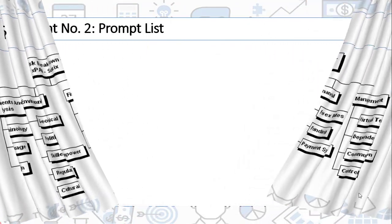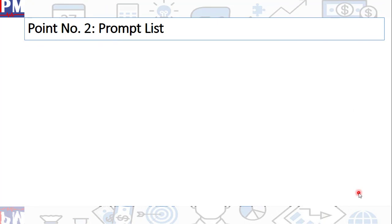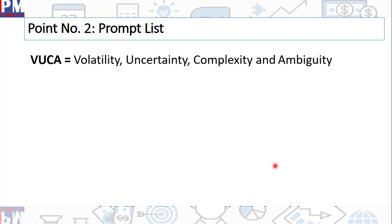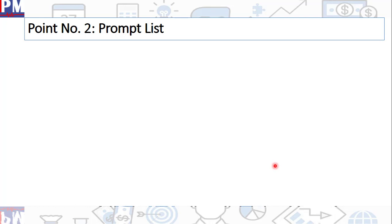Let's move on to point number two. Prompt list is another thing. For some reason, many candidates just don't get it. Unfortunately, there are a lot of books and trainers, particularly on Udemy. So when we talk about prompt list, one of them is VUCA. But before I talk about VUCA, let me go back. What is a prompt list? Prompt list is basically certain industries have some ready-made categories of risks.